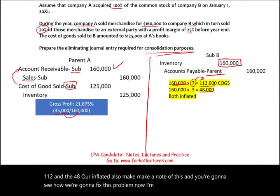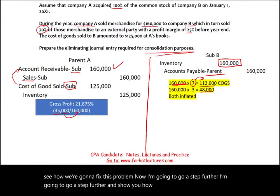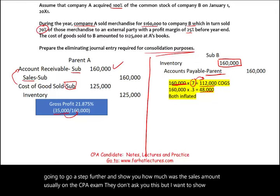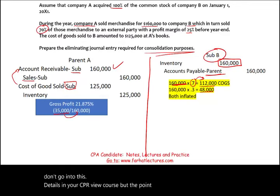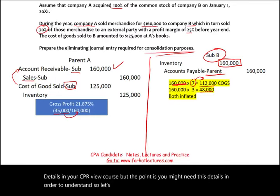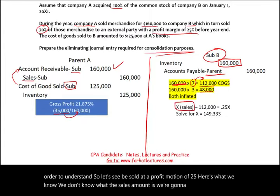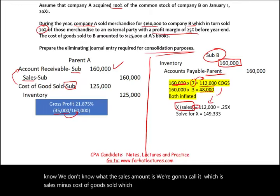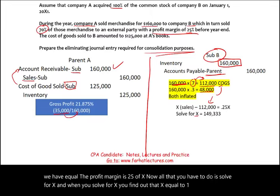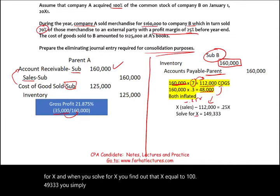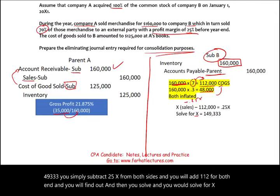Let's go a step further and find Company B's sales amount. B sold at a profit margin of 25%, so: X (sales) minus $112,000 (COGS) = 0.25X. Solving for X: 0.75X = 112,000, so X = $149,333. Company B will debit Accounts Receivable — Outside Party and credit Sales for $149,333, then debit Cost of Goods Sold for $112,000 and credit Inventory by $112,000.